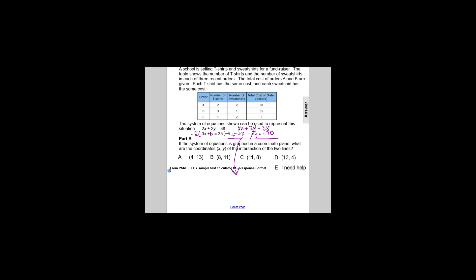We also have to add together the other parts of the equation. So 2x plus negative 6x is negative 4x, and that will equal 38 plus negative 70, which is negative 32.